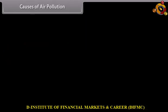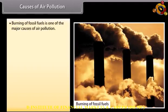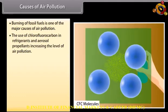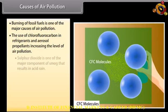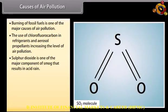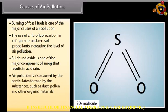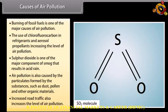Causes of air pollution. Burning of fossil fuels is one of the major causes of air pollution. The use of chlorofluorocarbons in refrigerants and aerosol propellants increases the level of air pollution. Sulfur dioxide is one of the major components of smog that results in acid rain. Air pollution is also caused by particulates formed by substances such as dust, pollen, and other organic materials. Increased road traffic also increases the level of air pollution.